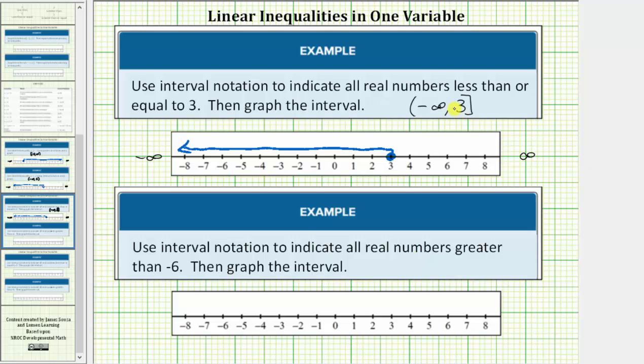Now for the second example we have all real numbers greater than negative six. Again let's first graph the interval. All real numbers greater than negative six does not include negative six, so we make an open circle or open point on negative six. And because it's greater than negative six, we draw an arrow to the right where values are greater than negative six. So here's the graph.